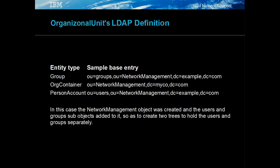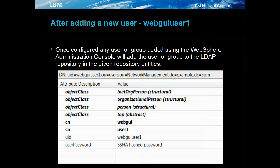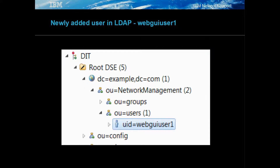Add the created user and group definitions to the supported entity types. When a user or group is added, they are added to the subtree in the Network Management domain. For example, the WebGUI user 1 is shown in the users tree, which is in the Network Management domain, within the example.com default domain.